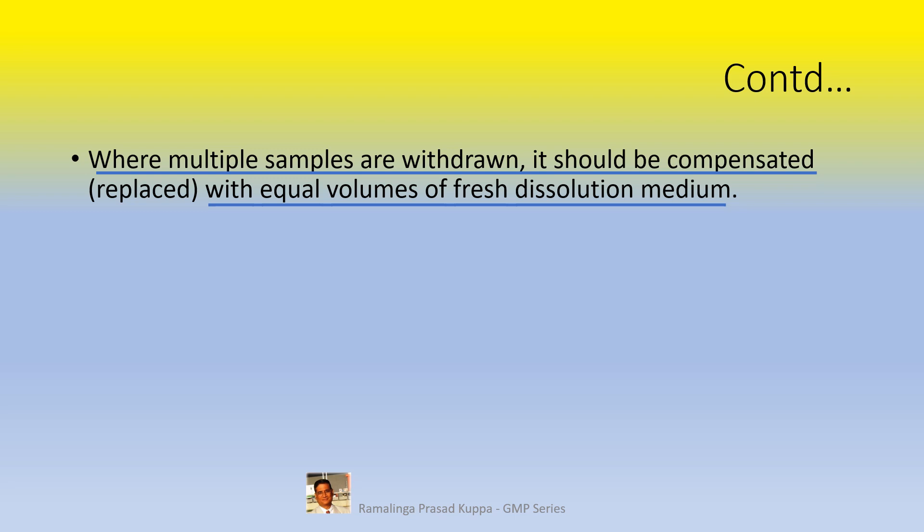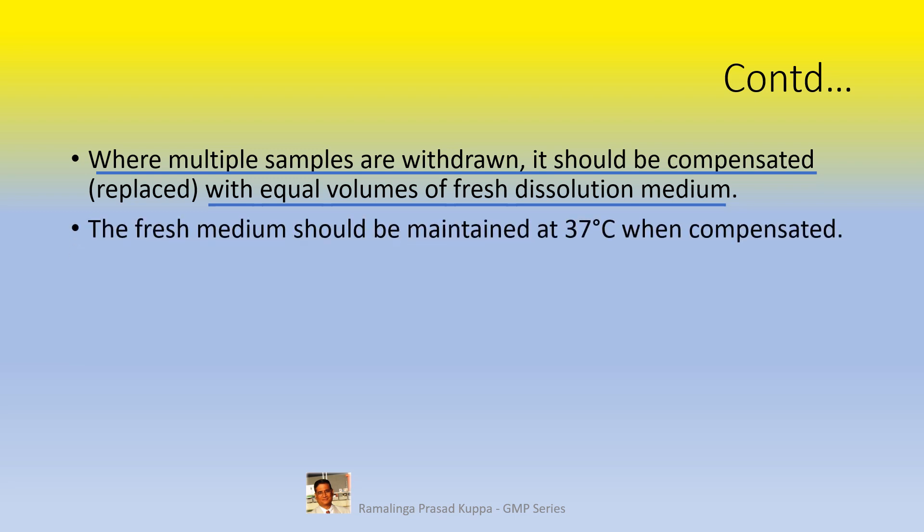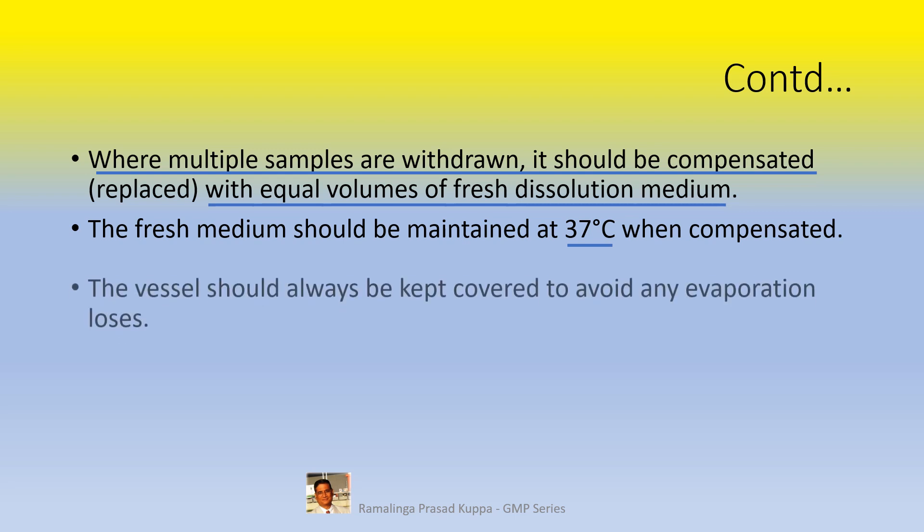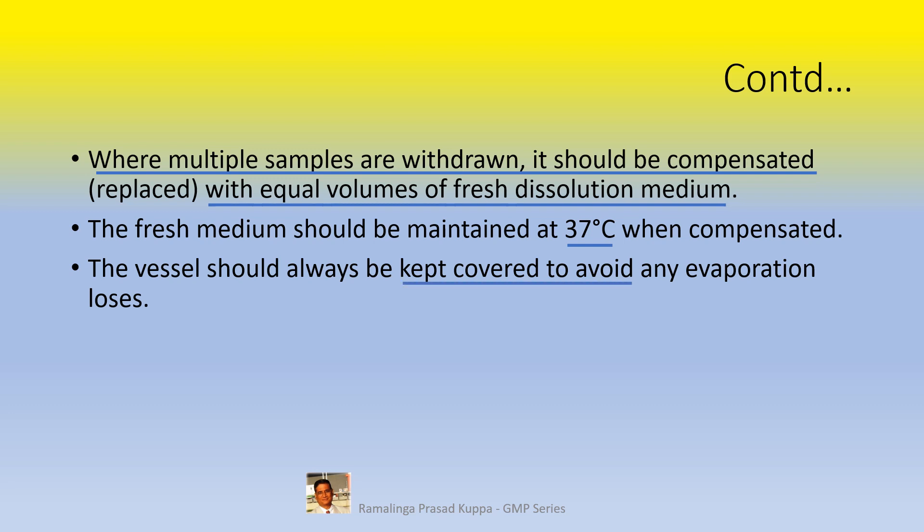But if the volume withdrawn is less than 10 percent of the total volume, it may not be necessary to compensate. Addition should be done carefully along the shaft or slowly slipped through the sides. If added at once, there is a potential for improper mixing, and the extra addition can give inconsistent results. Since there is also a provision to correct for volume through calculation, it may be acceptable even if the dissolution medium is not replaced. The fresh medium should be maintained at 37 degrees Celsius when compensated. The vessel should always be kept covered to avoid any evaporation losses.